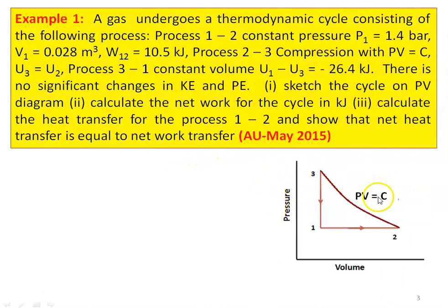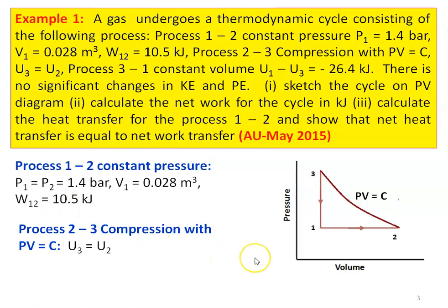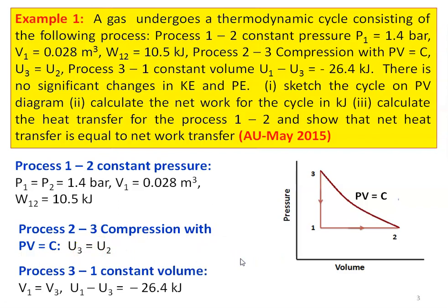This is the PV diagram for the three processes and the thermodynamic cycle: 1 to 2 is a constant pressure process, 2 to 3 is a constant temperature process, and 3 to 1 is a constant volume process. For the constant pressure process: P1 = P2 = 1.4 bar, V1 = 0.028 m³, W12 = 10.5 kJ. For process 2 to 3, PV = constant and U3 = U2. For the constant volume process 3 to 1: V1 = V3, and U1 − U3 = −26.4 kJ.